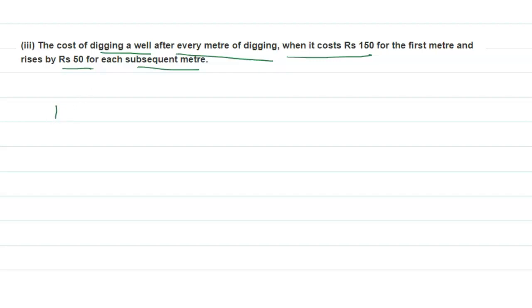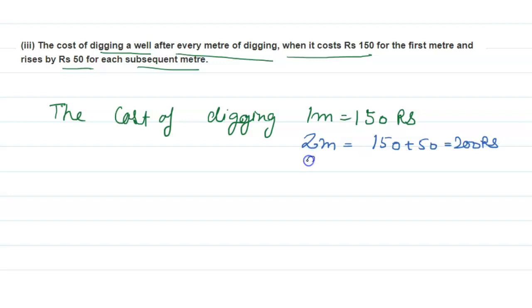The cost of digging one meter equals 150 rupees. After the second meter, it rises by 50 rupees, so 150 plus 50 equals 200 rupees. Next, for three meters it equals 200 plus 50, which is 250 rupees.